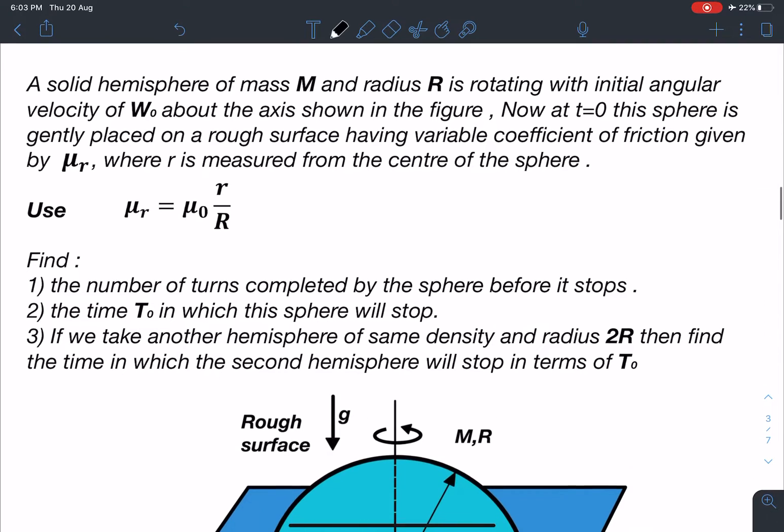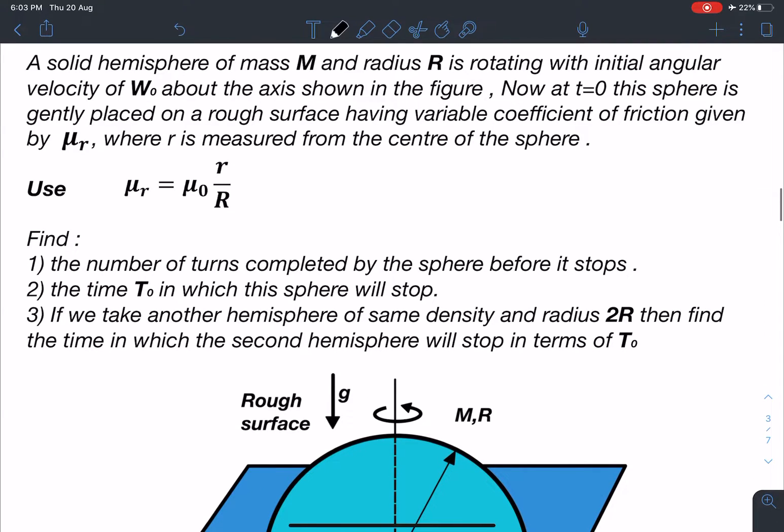So here it is, a solid hemisphere of mass M and radius R is rotating with initial angular velocity omega naught about the axis shown in the figure. Now at t equals zero, the sphere is gently placed on a rough surface.